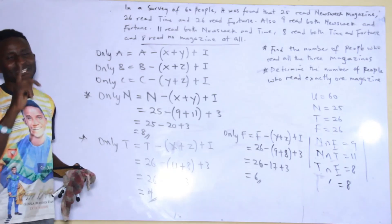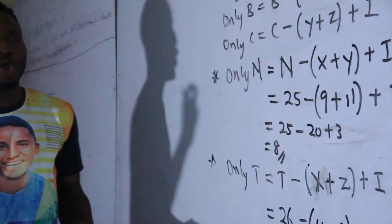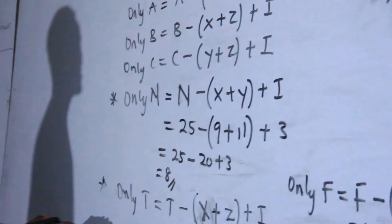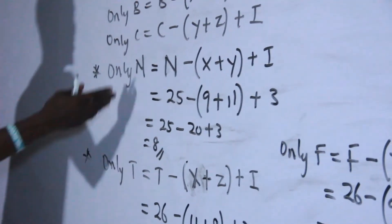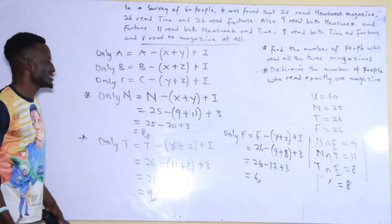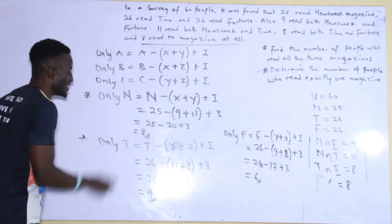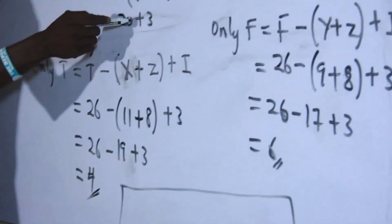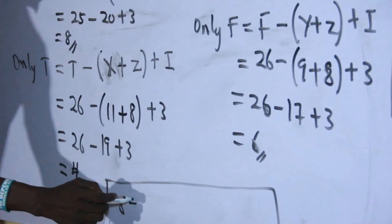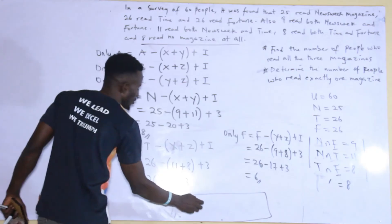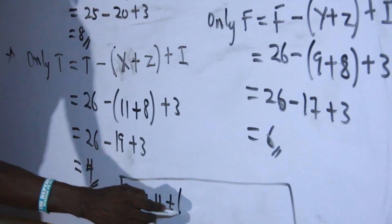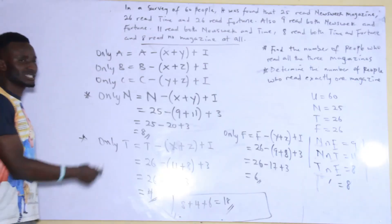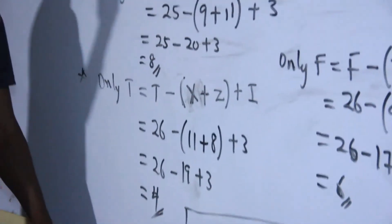Now, in the case where they ask to find only one of the magazines or exactly one option, this is how you solve it. If they ask exactly one magazine, exactly one equals only newsweek plus only time plus only fortune, which is 8 plus 4 plus 6. That gives 18. This is the final answer for these two questions.